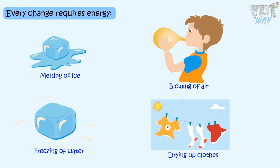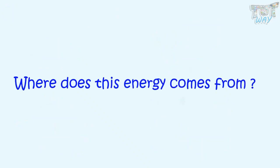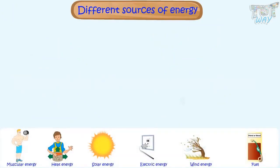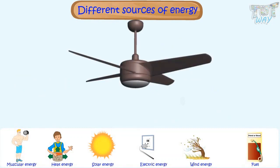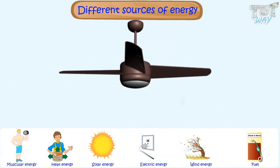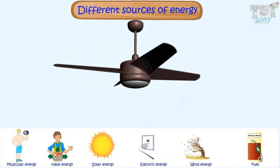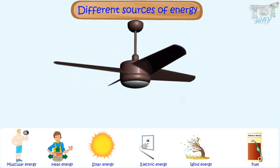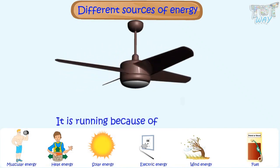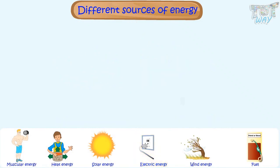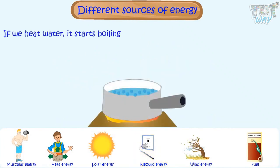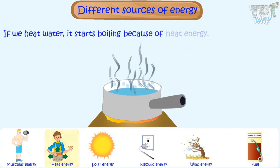Now let's see where this energy comes from, or let's learn about the different sources of energy. If we switch on a fan, it starts running — where does it get energy? It is running because of electrical energy. If we heat water, it starts boiling because of heat energy.